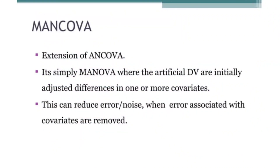MANCOVA is multivariate analysis of covariance, which is an extension of ANOVA. In MANCOVA, the dependent variables are initially adjusted for differences in one or more covariates, which also reduces error — mainly the error among the covariates is removed.